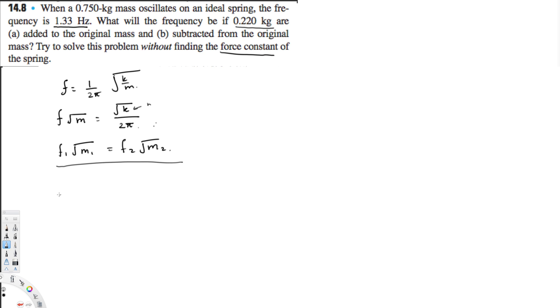The first situation is saying 0.220 is added to the original mass. So if we add them together, let me put all the values first. m₁ is 0.750 kilograms, f₁ is 1.33 Hertz, and m₂